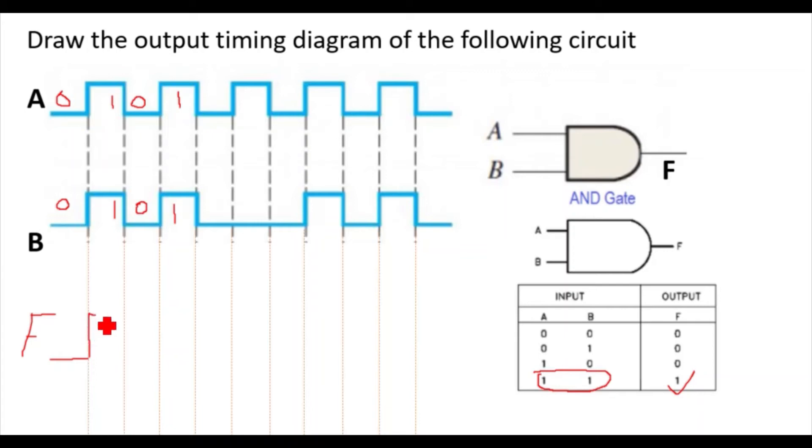Now next is 0, 0, so it will again become 0. 1, 1, so it will again go to 1. Then this is 0 and this is 0, so 0, 0 you will get 0. Now here this is 1, 0, so you will get 0 here.